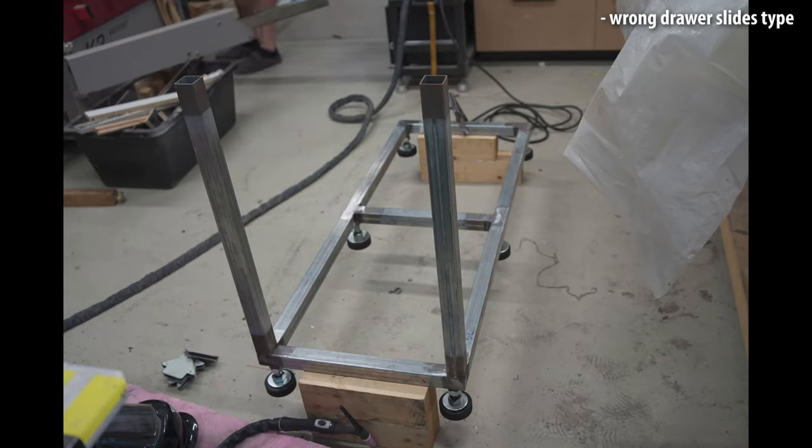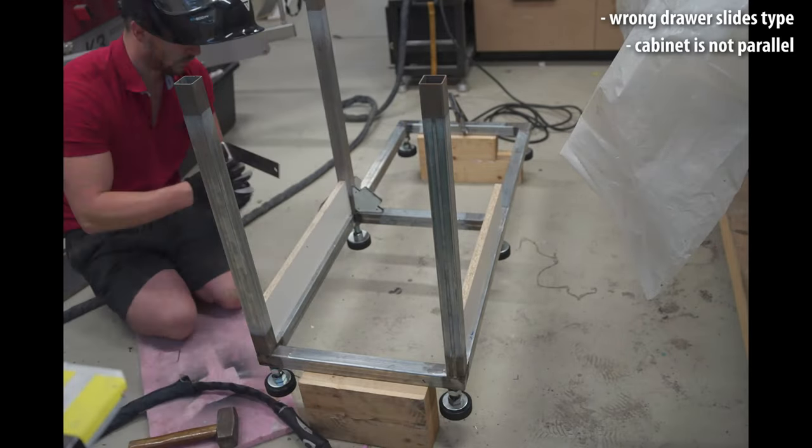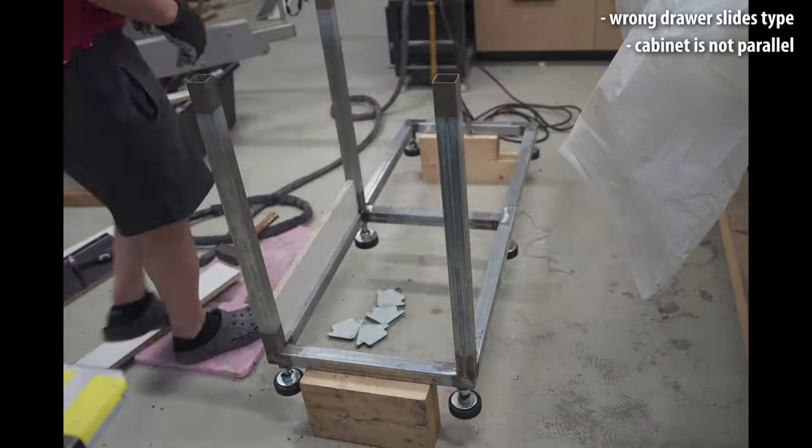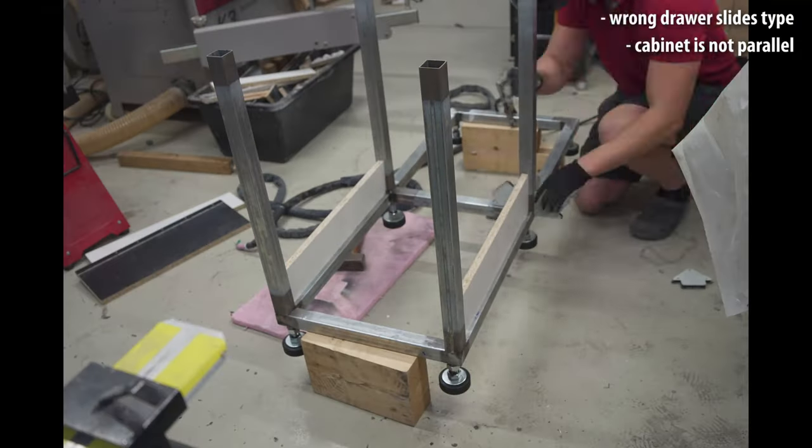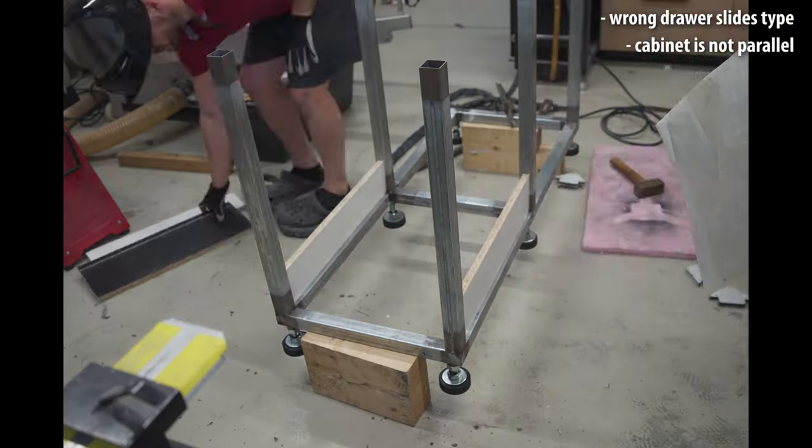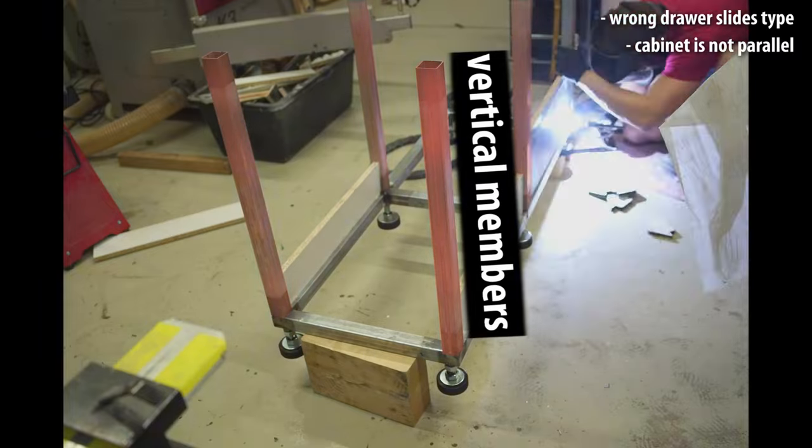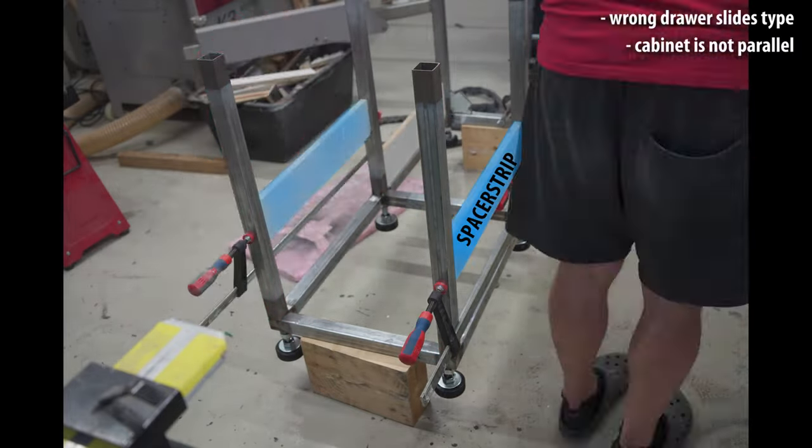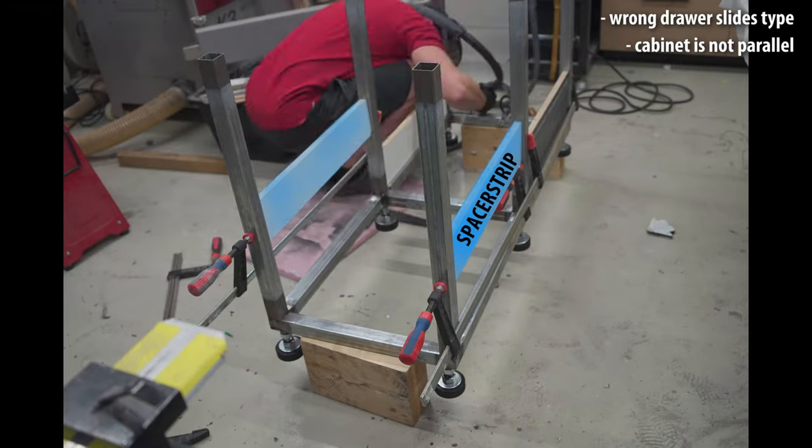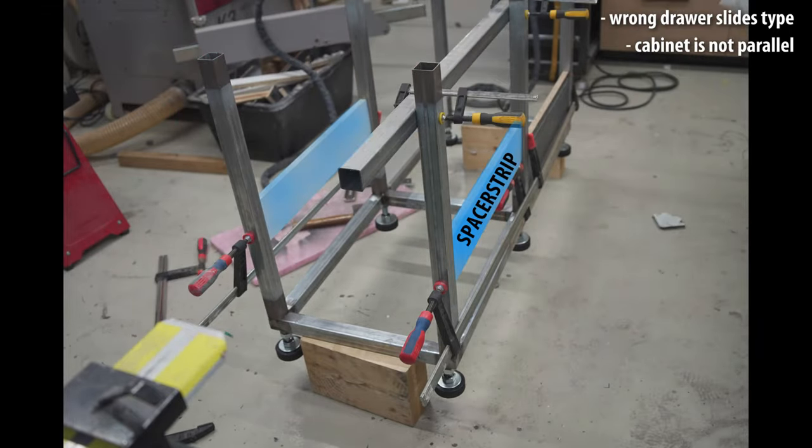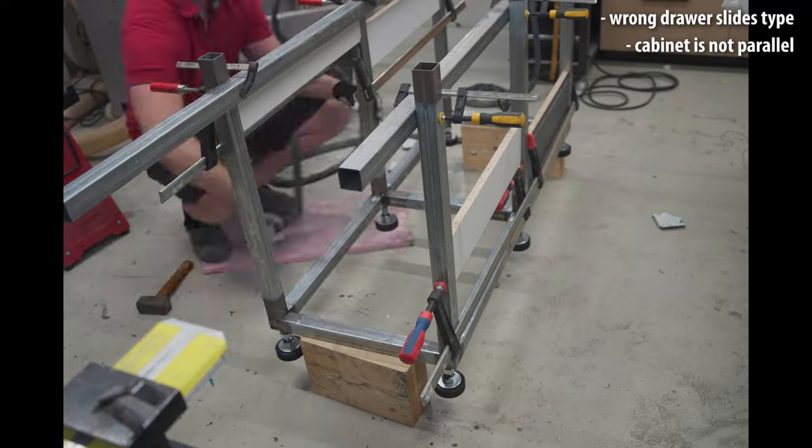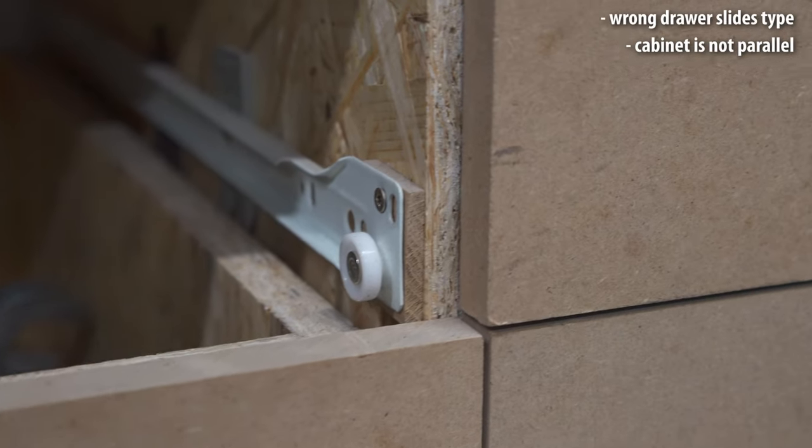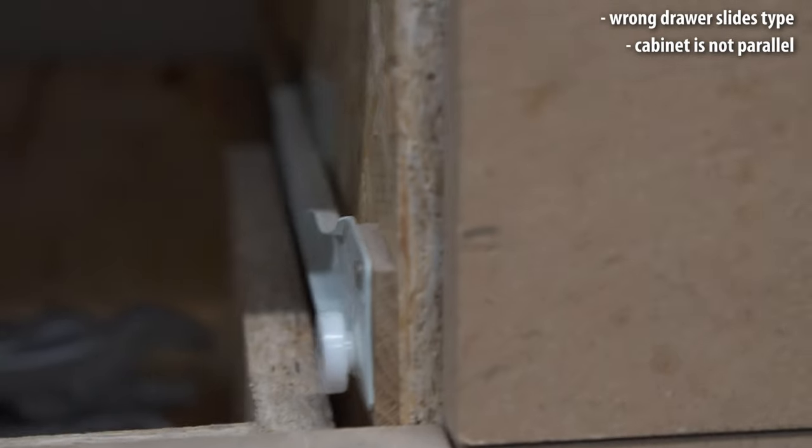Mistake number 2: building the cabinet not absolutely parallel. Your base can be wonky and crooked as you like, but in order to have smooth operation you must ensure the vertical structure where the drawers are mounted is absolutely parallel. Good practice is to use spacer strips in the desired size and build your cabinet around it so the vertical uprights are equally apart everywhere. In a pinch you can band-aid a crooked cabinet with some shims.